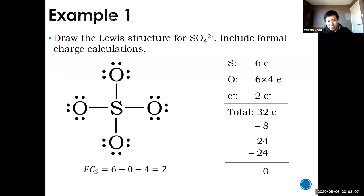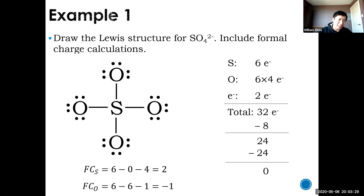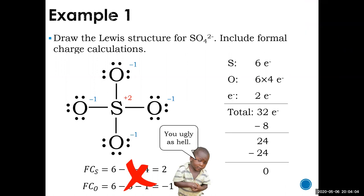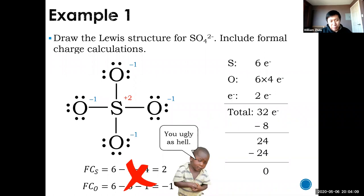So we're done, right? No. Octets are no longer what we're looking for — we check formal charges. For sulfur: six valence electrons, zero non-bonding, four bonds — that's a formal charge of plus two. For each oxygen: six valence electrons, six non-bonding, one bond — that's negative one. You have no zeros and a disgusting plus two. This should burn your eyes. You need to fix that by making double bonds to reduce the formal charges.